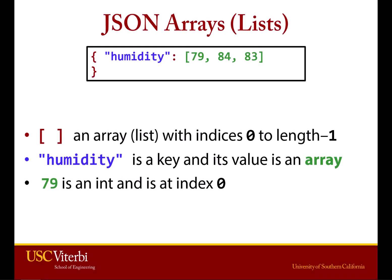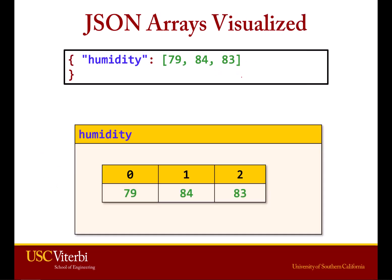JSON calls what Python calls lists 'arrays.' A JSON array is like a list. Here's our outer JSON object with curly braces, and we have the key 'humidity'. The value is a list: 79, 84, 83. Just like we're used to, the list is going to have indices from zero to length minus one. Visualizing that: humidity colon, and then my list — index zero, one, and two.